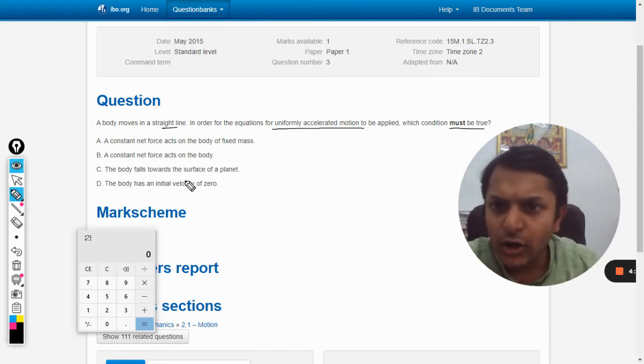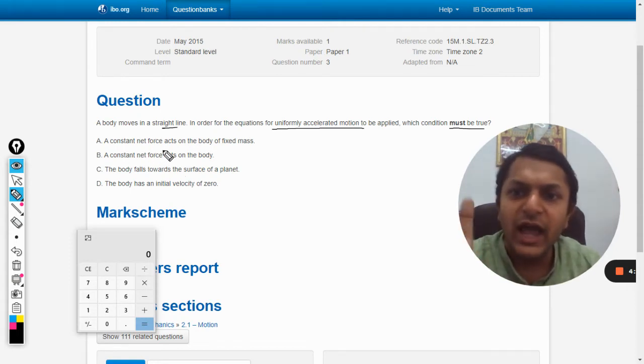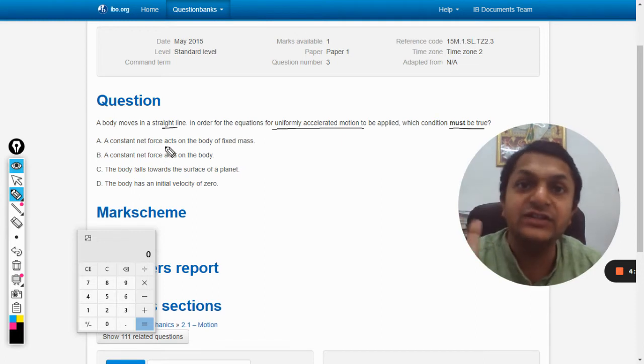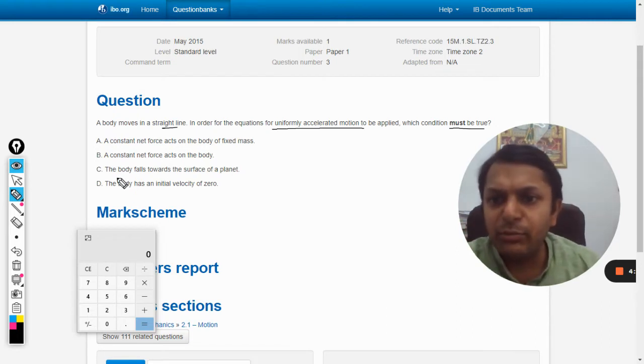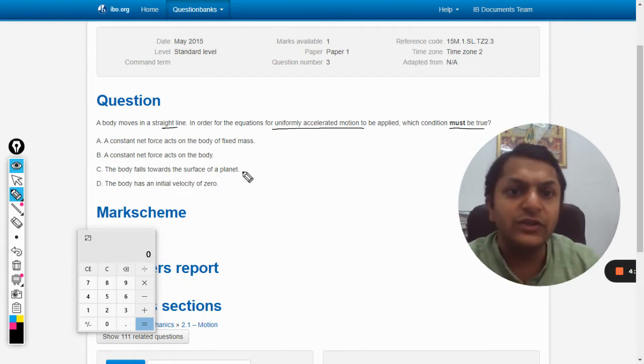Let us see the options that are given. Option A: a constant net force acts on a body of fixed mass. Option B: a constant net force acts on a body. Option C: the body falls towards the surface of a planet. Option D: the body has an initial velocity of zero.